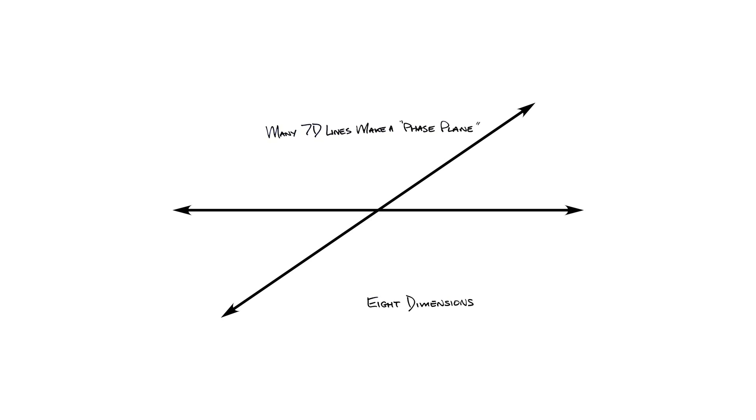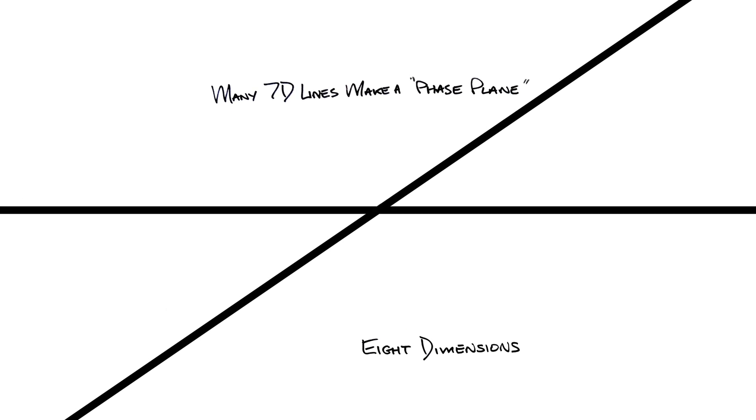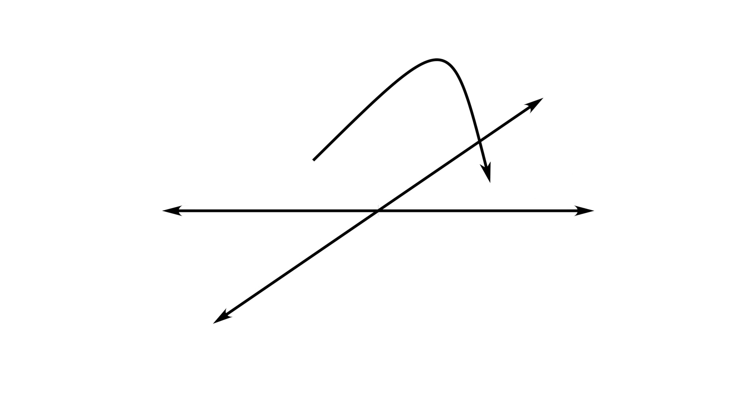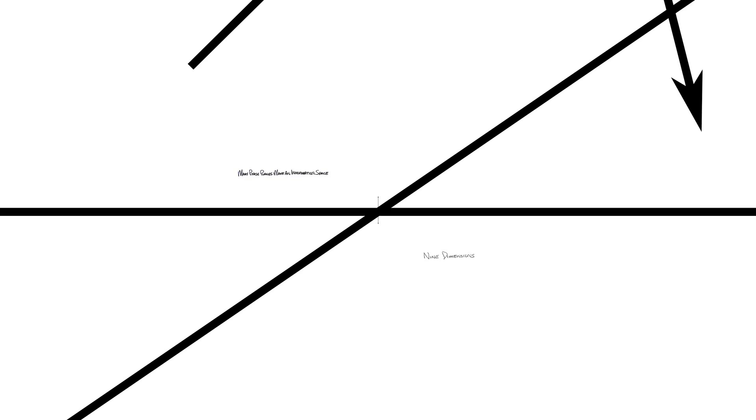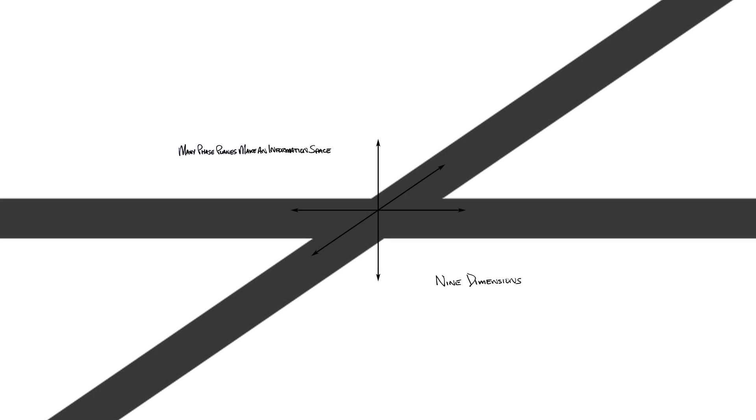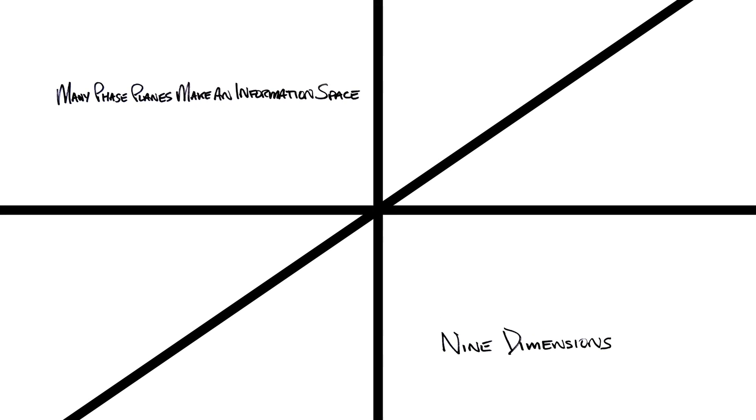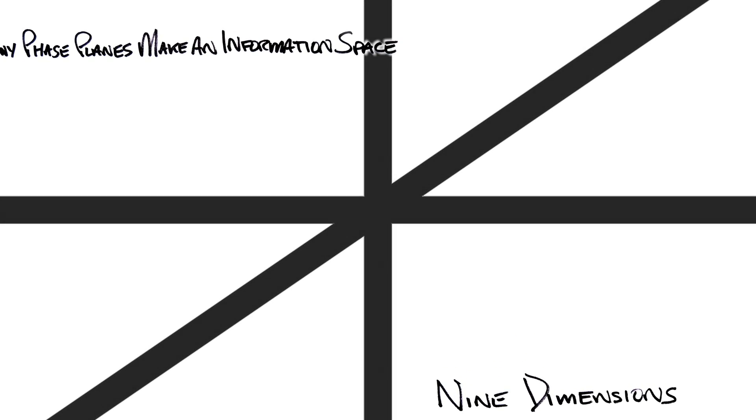Other lines can be used to create a phase plane of physical universes in eight dimensions. From the eighth dimension, the ninth dimension is what you would jump through to instantaneously move from one position to another, or to jump to a completely different eight-dimensional phase plane. Many phase planes make an information space, nine dimensions.